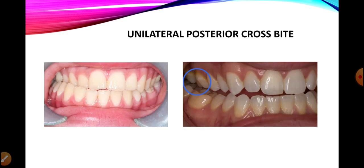According to the side on which the crossbite is present, we classify posterior crossbites as unilateral or bilateral. If the posterior teeth are involved on only one side — either right or left — it is known as a unilateral posterior crossbite. As seen in the picture on the left, only the right posterior segment is involved in the crossbite, making it a right unilateral posterior crossbite, while the left segment is totally fine and following the normal line of occlusion.